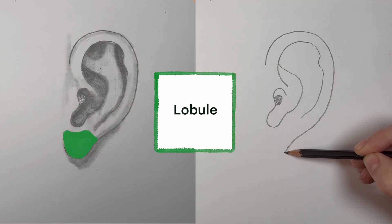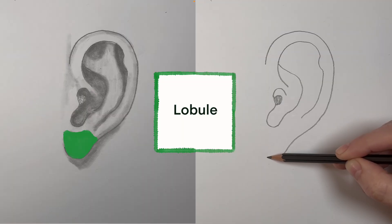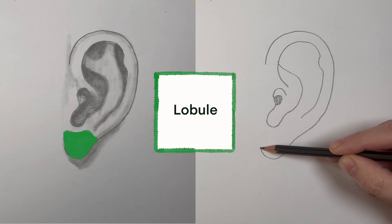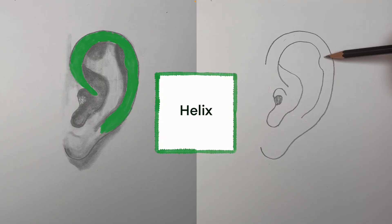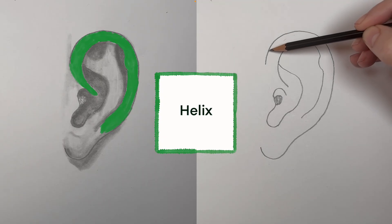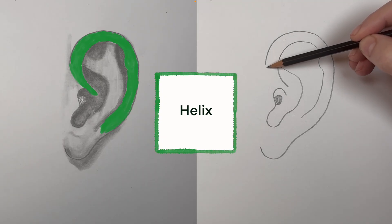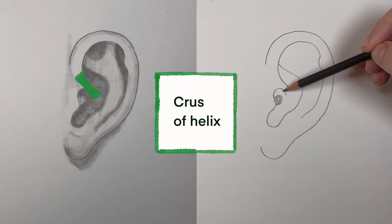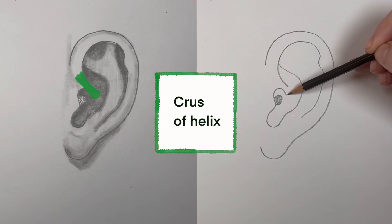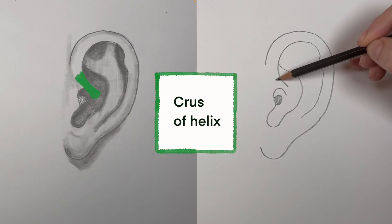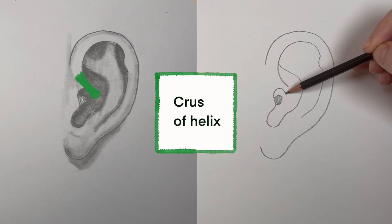Then we get into the lobule. Lobule comes from Latin lobulus, it means small lobe. This is also called the ear lobe. Looking at the helix again, there's one more part. The helix swings all the way around, but if we just look at this part that goes into the concha, this is called the crus of the helix. A crus is a leg or a branch in Latin, and so it refers to something that sticks out.